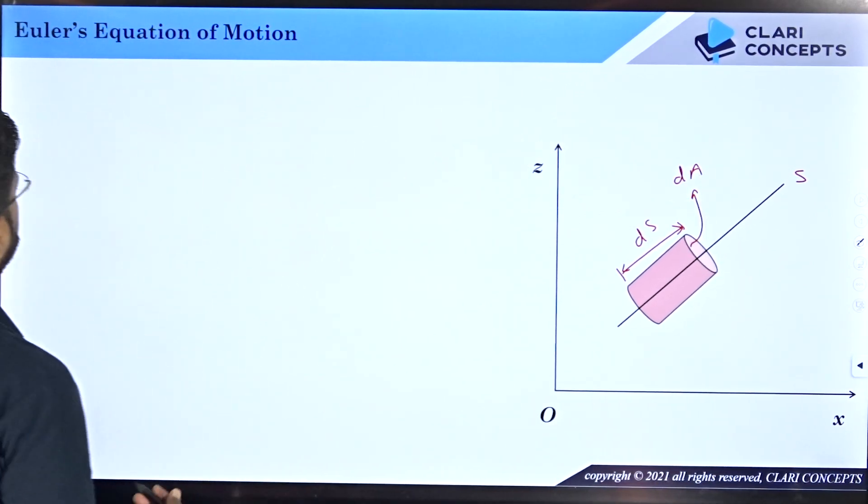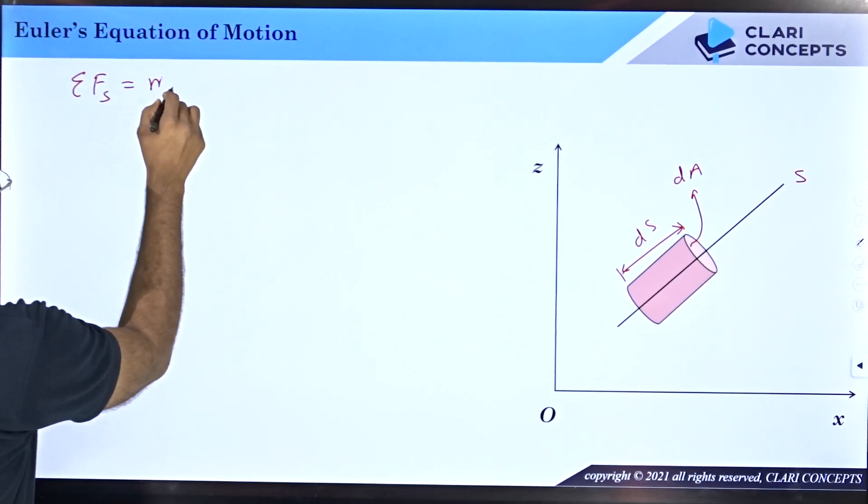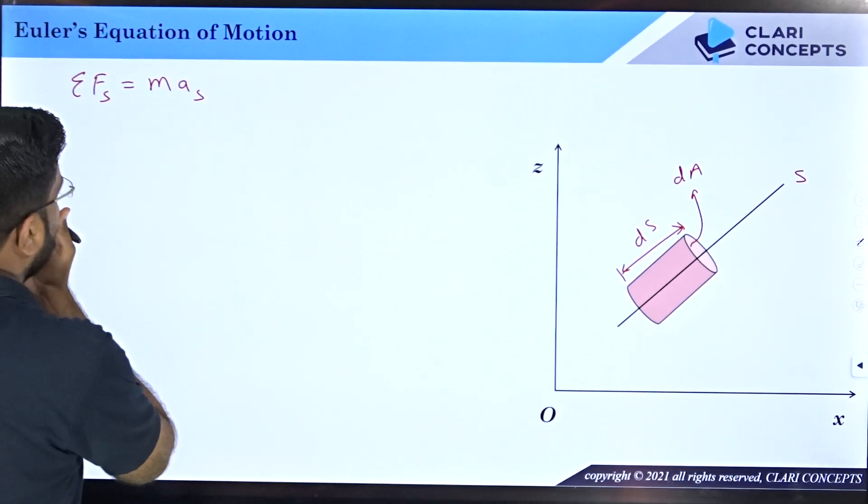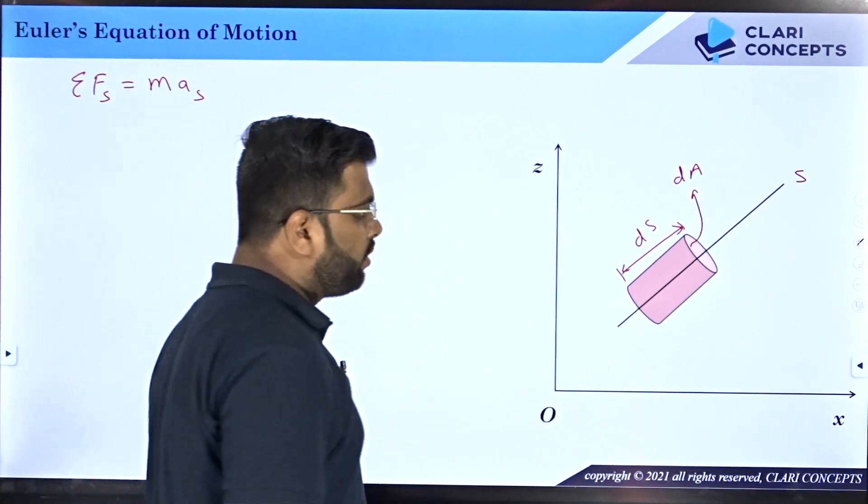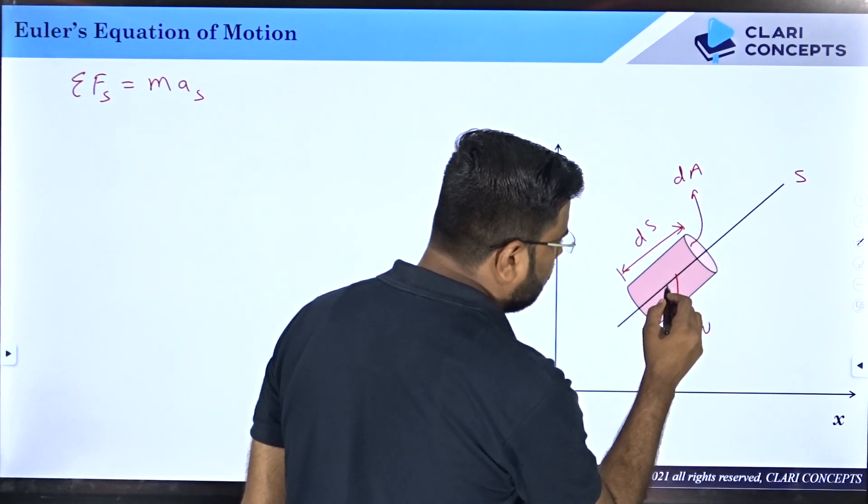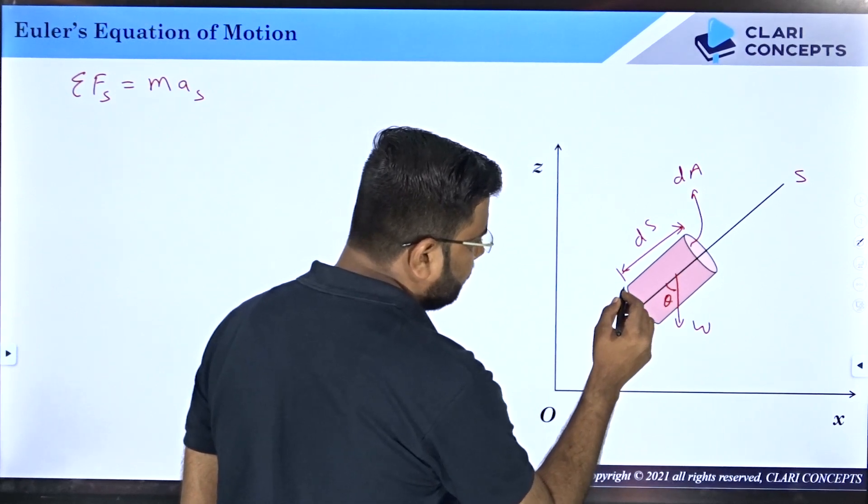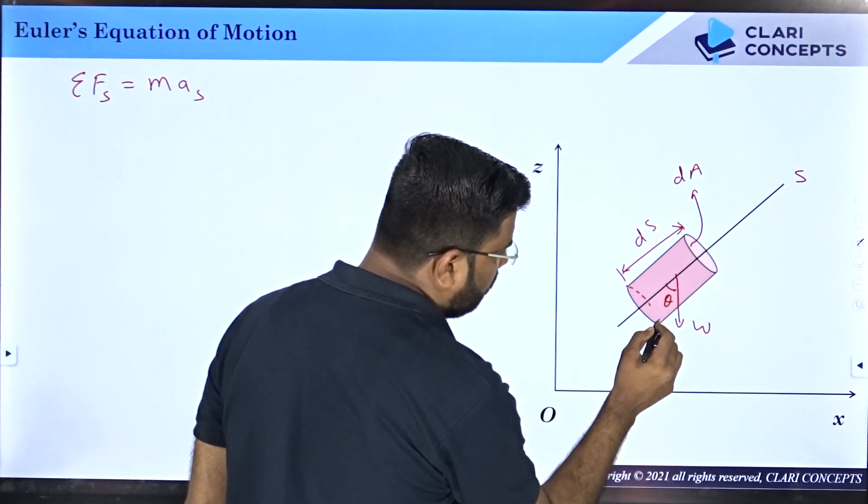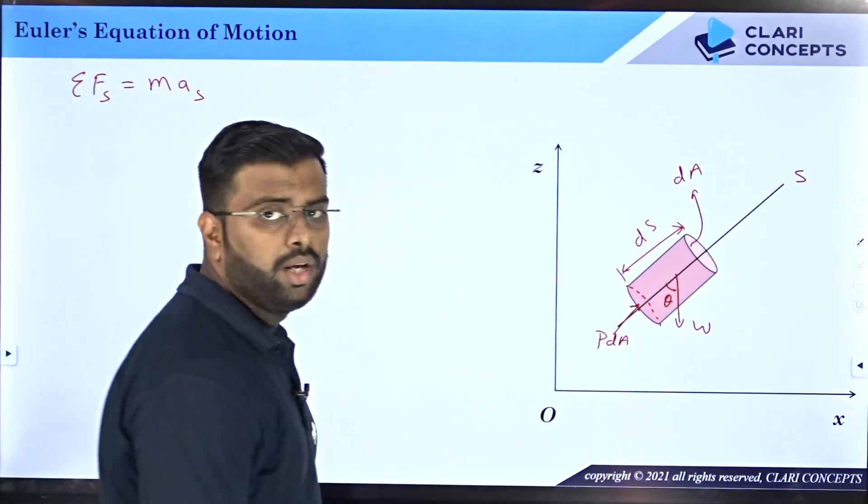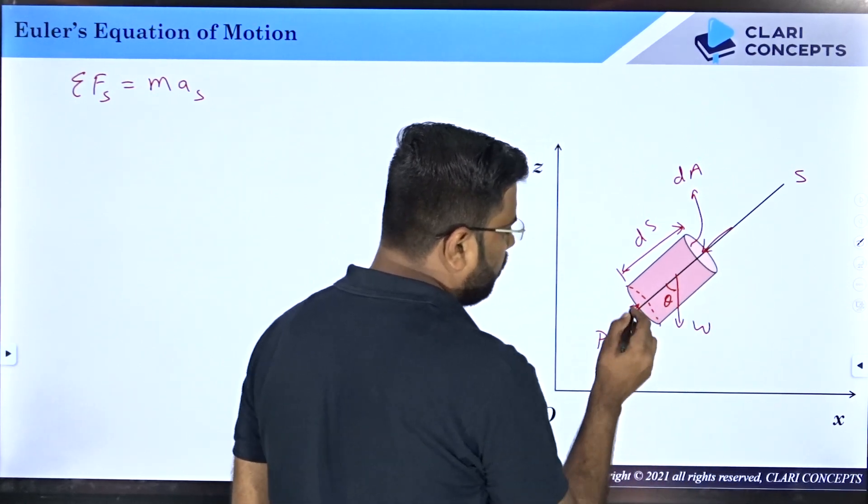Now as per the energy equation, we can say that summation of forces acting along S direction should equal mass of the element times acceleration of the element along S direction. We will try to see what are the forces acting on this element. One of the major forces will be weight force which is downward W. Let's say the angle is theta. This is weight, a body force. The surface forces will act on this face. Pressure over here is P and force will be P times dA. Similarly on this face, pressure force will be acting in opposite direction, so pressure here is P plus dP.